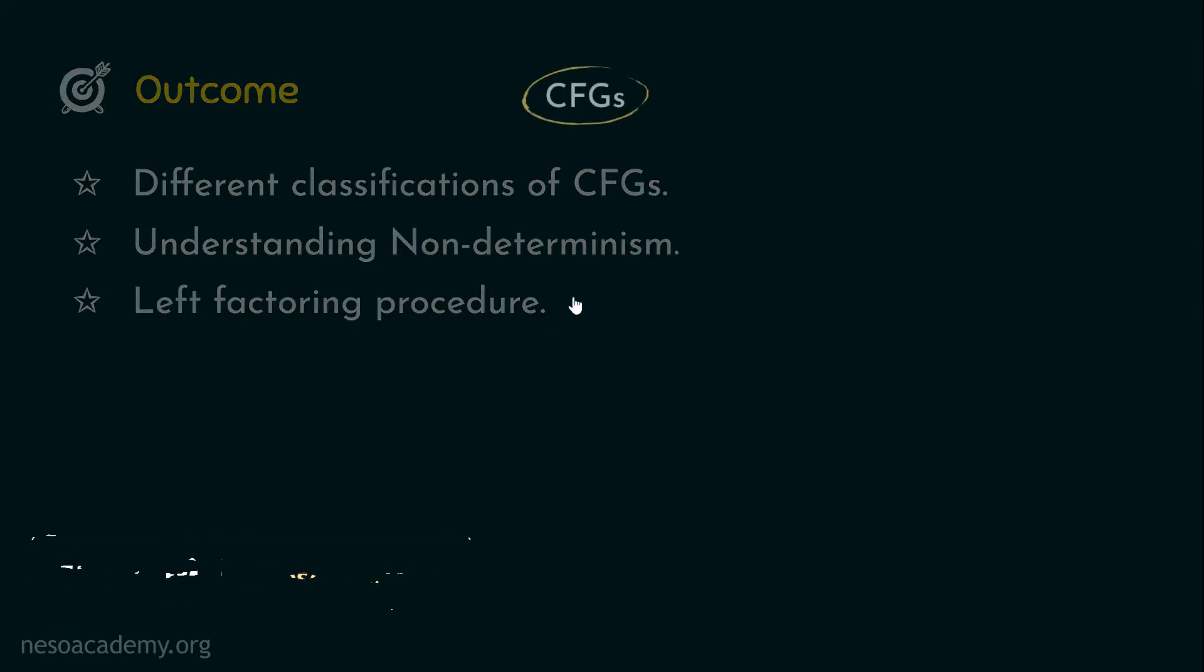We already have seen different types of context free grammars so far. During this journey of learning about context free grammars, we first came to know about the ambiguous CFGs and the unambiguous CFGs. Except the operator precedence parser, all the other parsers need unambiguous grammars. Due to ambiguity we face violation of associativity and precedence properties.